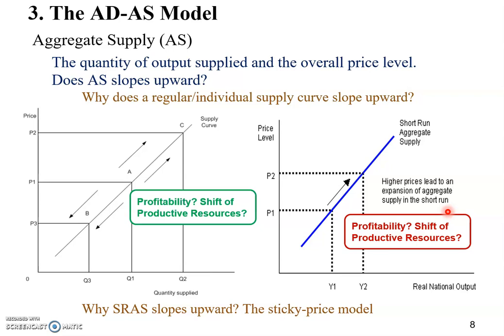When input prices are stickier than final product prices, it creates a short period of time when profitability increases. Of course, when it becomes more profitable, producers would like to produce more — and that explains the upward-sloping short-run aggregate supply curve. In other words, in the short run, a higher price level leads to a higher quantity of output produced.